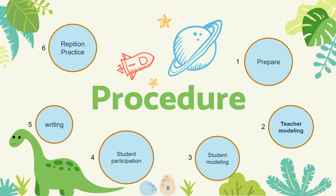The fifth step is Writing: write the word or phrase where all students can see it, so they can make the connection between oral and written words. Finally, the sixth step — Repetition and Practice — is very important: review and practice words with the students multiple times to ensure learning, revisiting words regularly so students don't forget them.